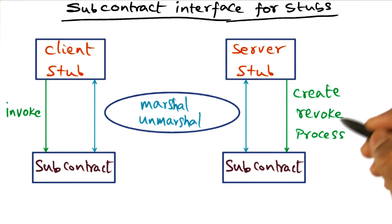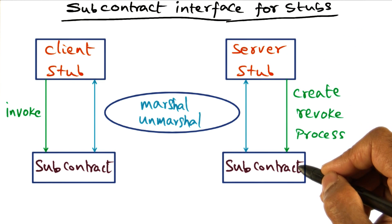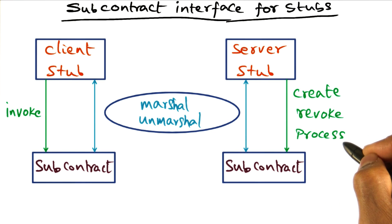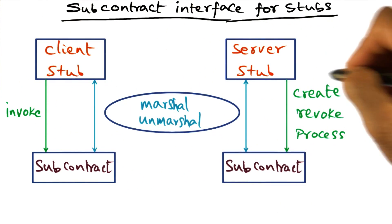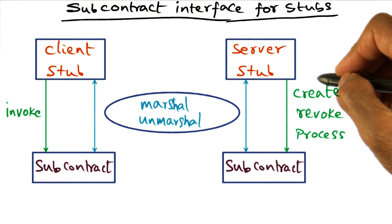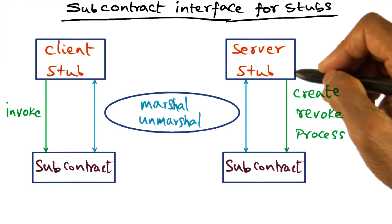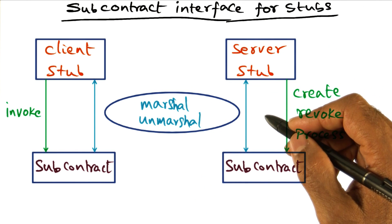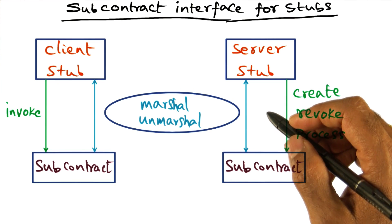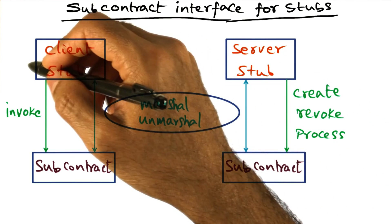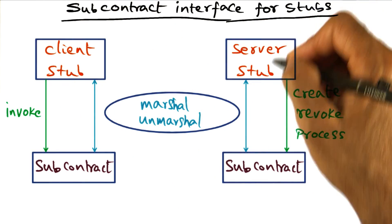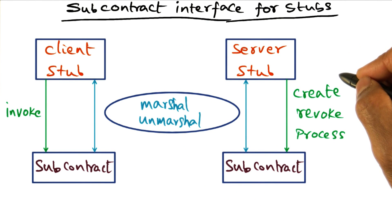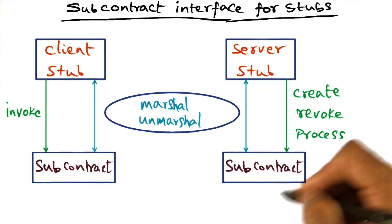On the service side, the subcontract gives a different set of mechanisms. It allows the server to revoke a service, or to tell the subcontract that it's open for business by saying it's ready to process invocation requests. The client stub and the service stub don't have to do anything differently whether the client and server are on the same machine or a different machine, replicas, or cache copies. All of the magic happens down below in the subcontract mechanism.